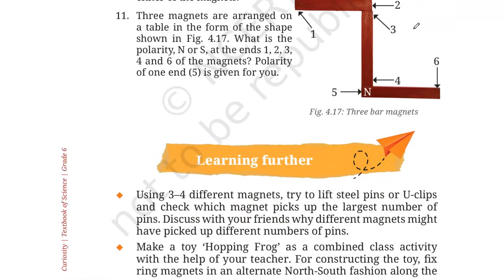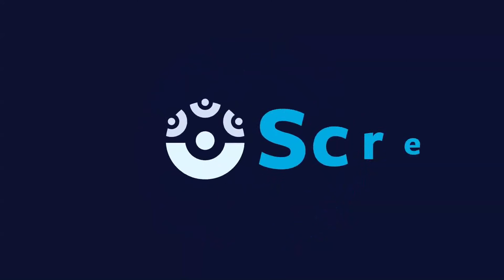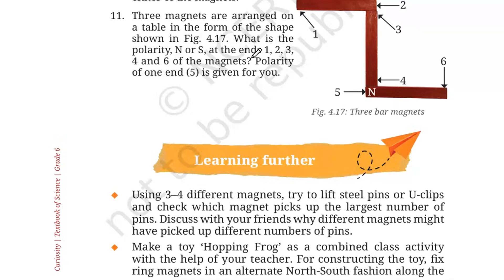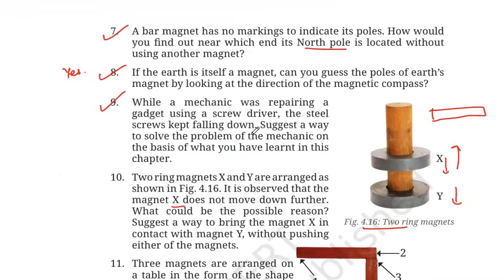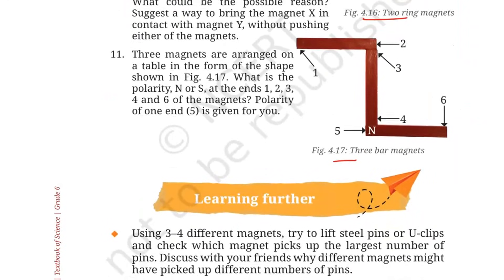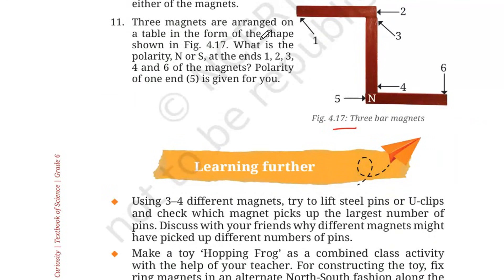Coming to question number 11. In this question, we have three magnets arranged on the table in the form of a shape shown in figure 4.17. Now you can see them clearly. What is the polarity of north or south at the ends 1, 2, 3, 4, and 6 of the magnet? The polarity of one end, the fifth end is given for you. Easily you can do this. You know this is north, so this will be obviously south because magnet always have two poles. So 6 is south. Now coming to number 4, you see they are easily placed on one another. If this is north, they will repel, but they are not repelling, they are placed on each other. That means that this has to be south. So number 4 is south.